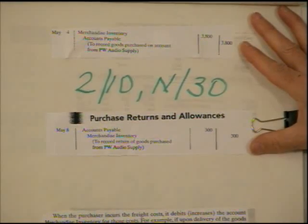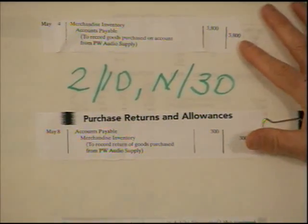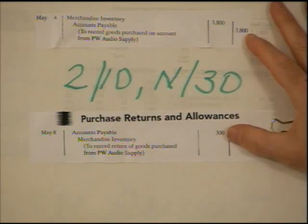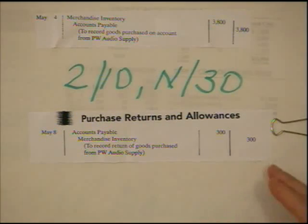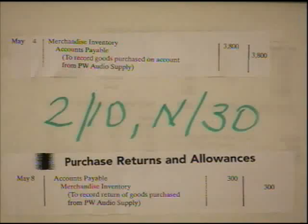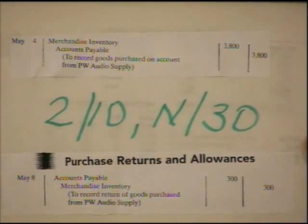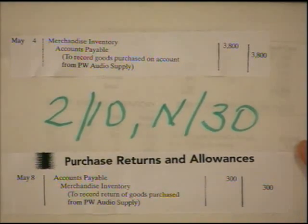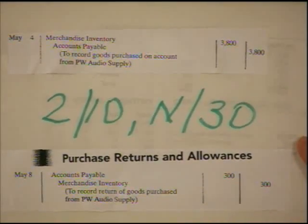At this point, we'd only have an accounts payable of $3,800 minus $300, which means we only owe $3,500. And now it's time to pay. We have accounted for our purchase return and allowance.